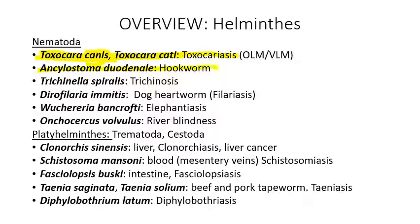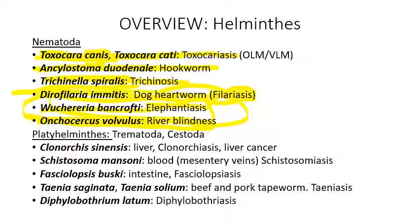Ancylostoma duodenale is commonly known as hookworm — a nematode that can infect animals including humans. Trichinella spiralis causes trichinosis and can be caught from eating undercooked meat from hunted wild animals. Dirofilaria immitis is dog heartworm, a filariasis. Wuchereria bancrofti causes elephantiasis, and Onchocerca volvulus causes river blindness. These three are classified as filariases.